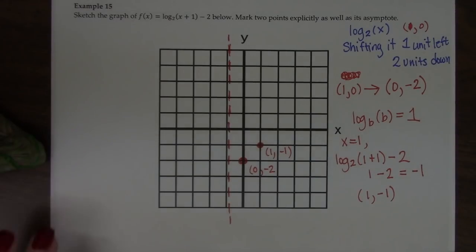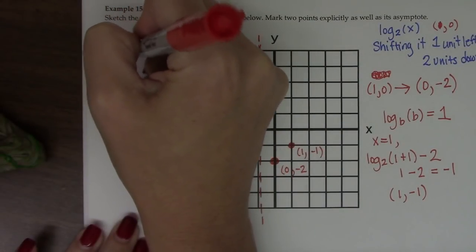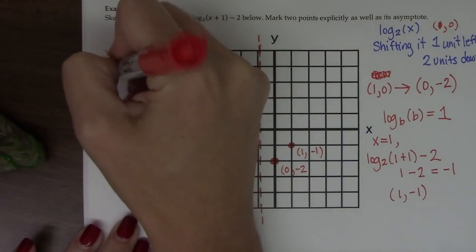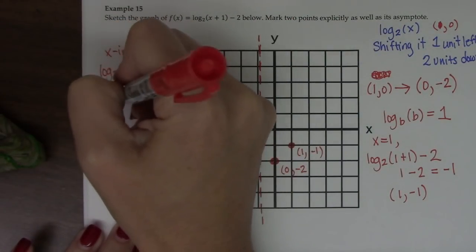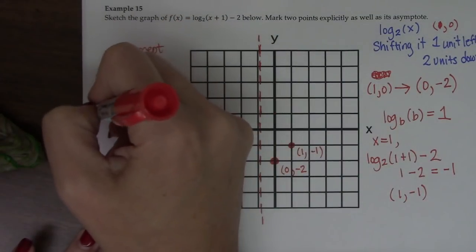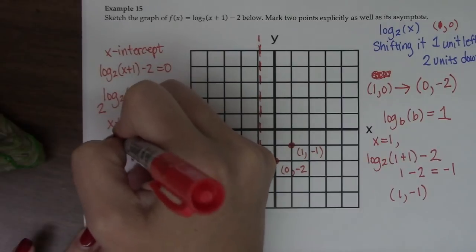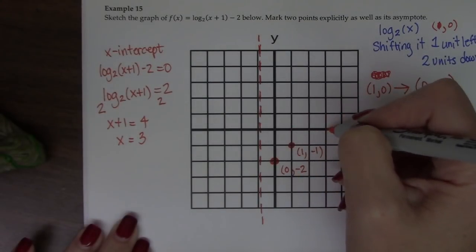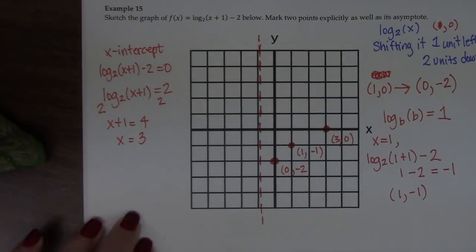And so if we set the graph equal to 0, I could look for its x-intercept and I could say, well, if log base 2 of x plus 1 minus 2 equals 0, then log base 2 of x plus 1 equals 2. I can raise each side over 2 and say x plus 1 equals 4, so x equals 3. So that means 3, 0 is another point we could find.